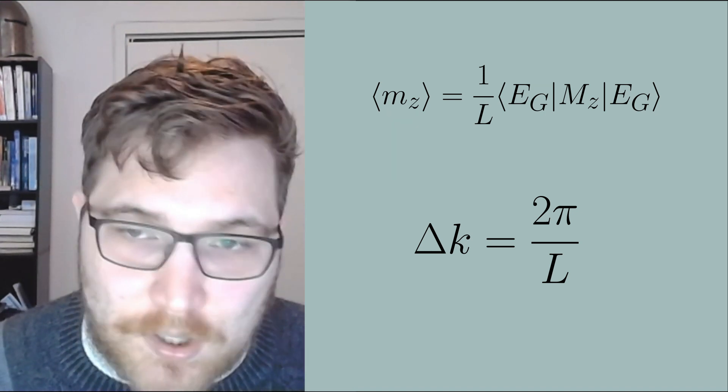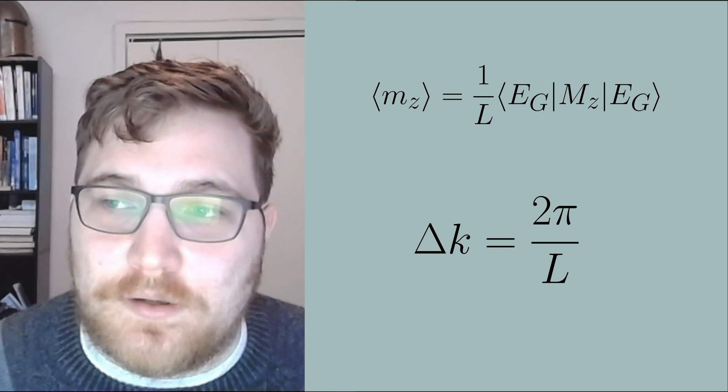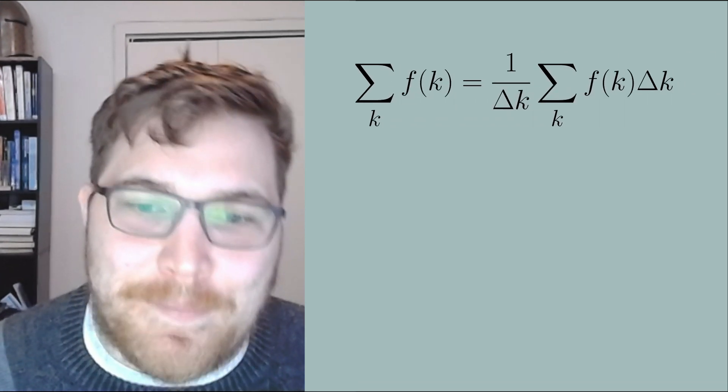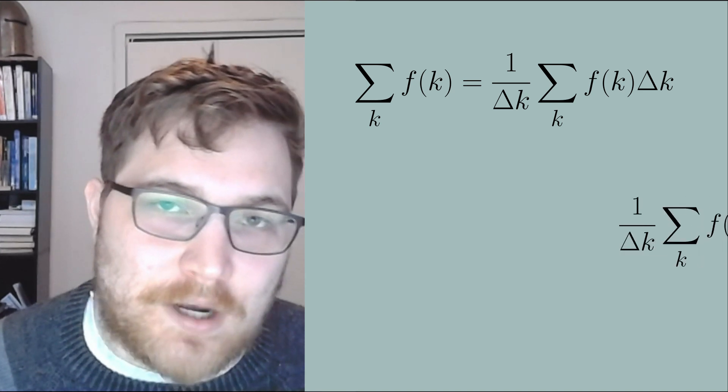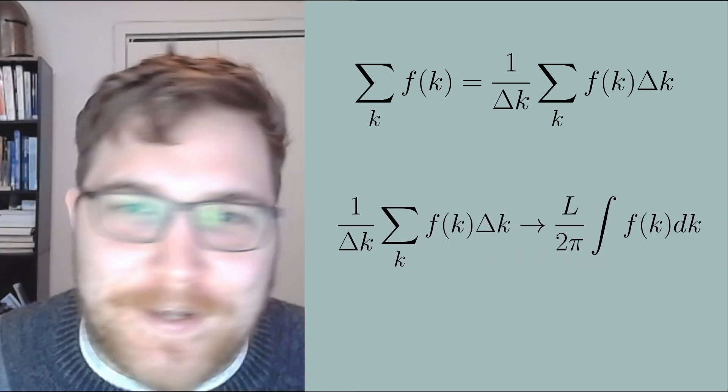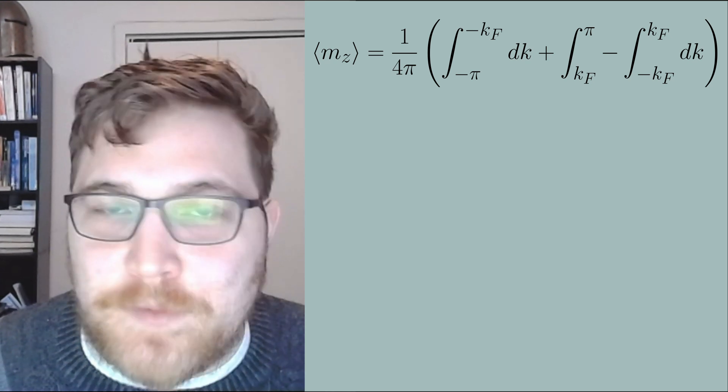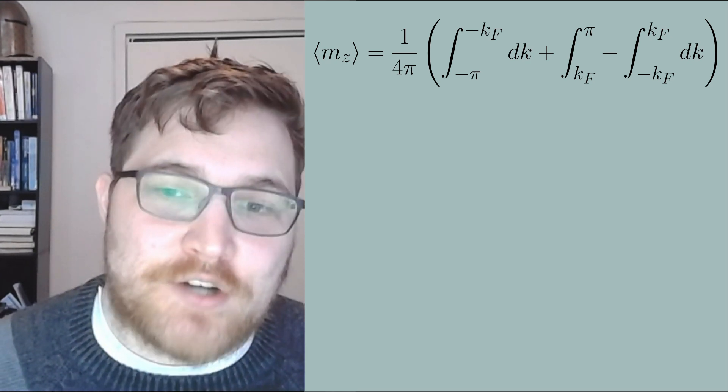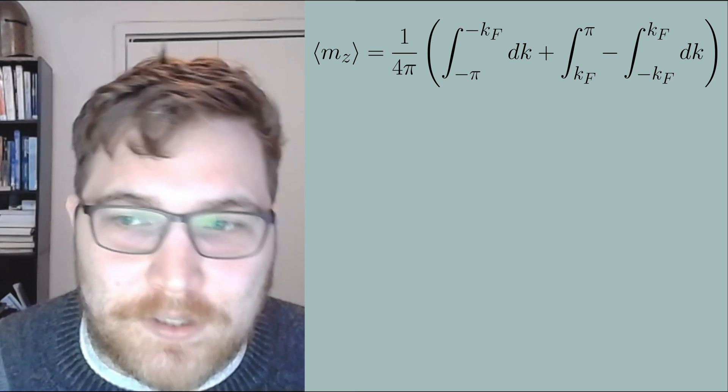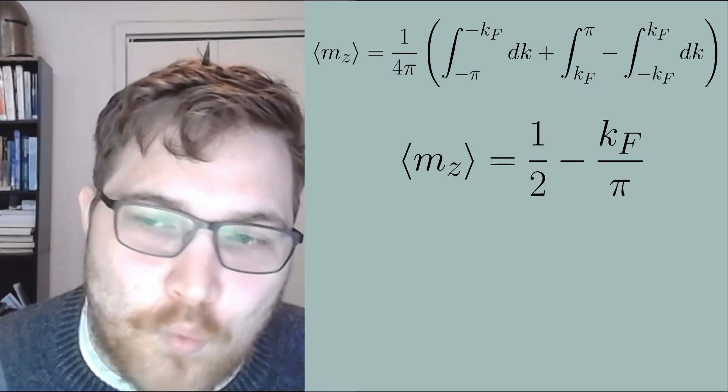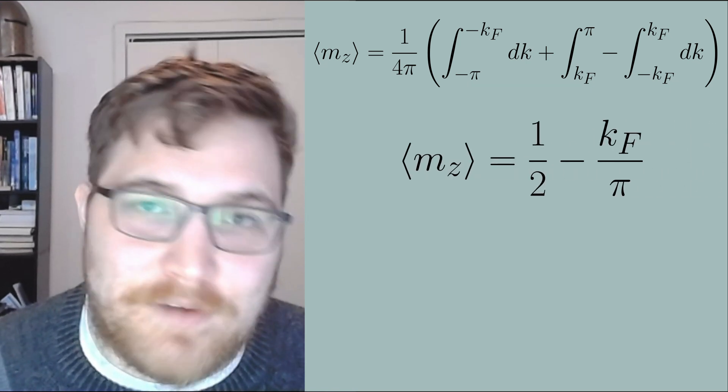We will transform our sum into an integral. Starting from the sum of a function of k, we insert delta k by multiplying and dividing it, making the sum look like a Riemann sum. We have an exact expression for what delta k is. In our case we can write the expectation value of the magnetization in the z direction per site as the following expression. This is easily evaluated: our magnetization per site becomes one half minus the Fermi momenta divided by pi.